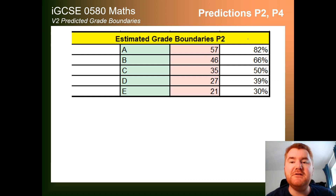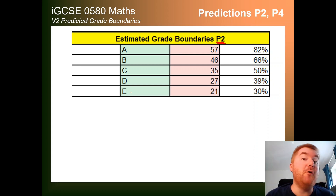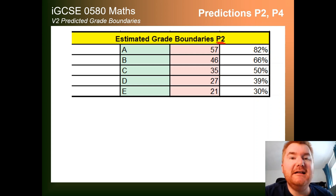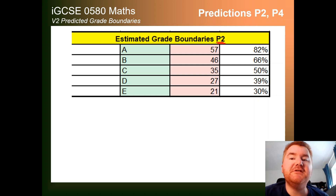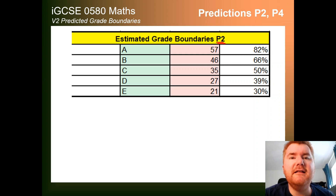For Paper 2, these are my grade boundaries from A to E. If you're wondering where the A-star grade boundary is, that only exists overall with Paper 2 and Paper 4. Not too many surprises on this — slightly higher than in previous years.